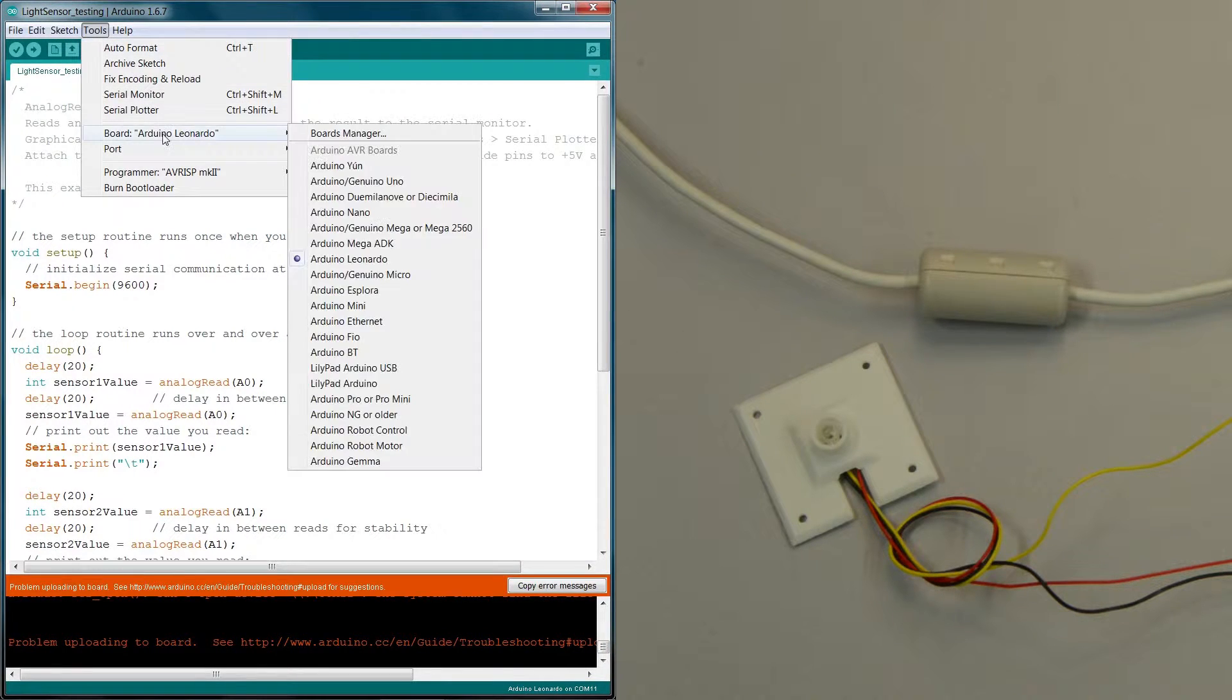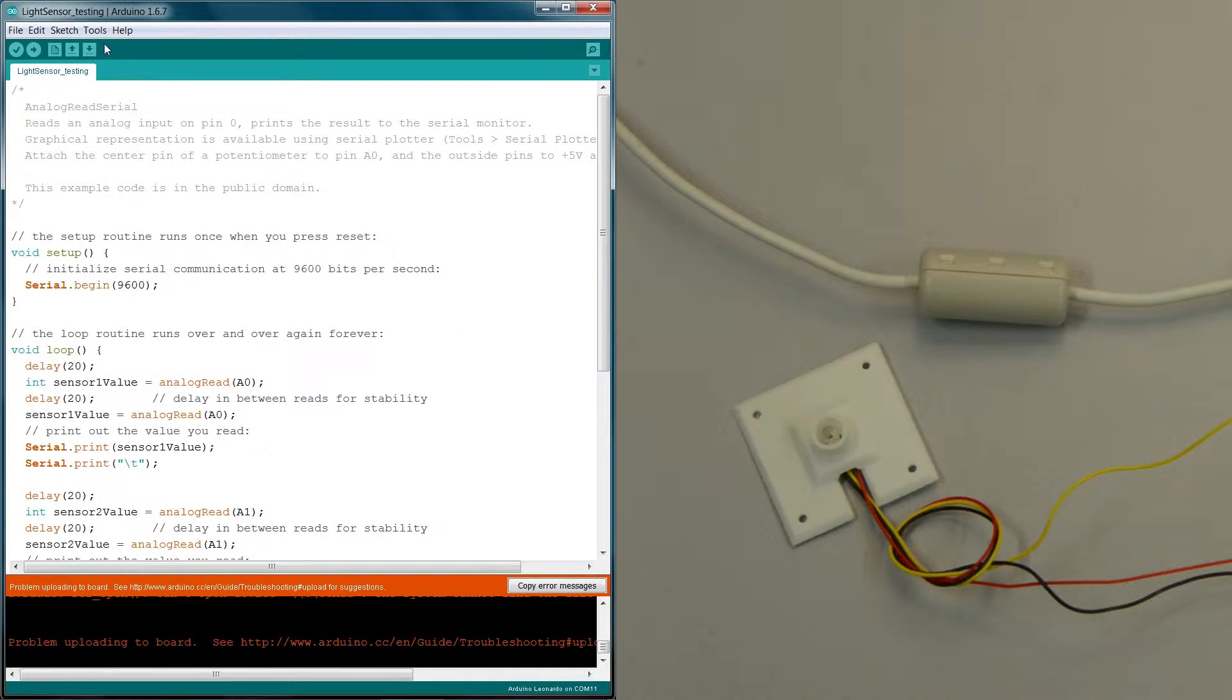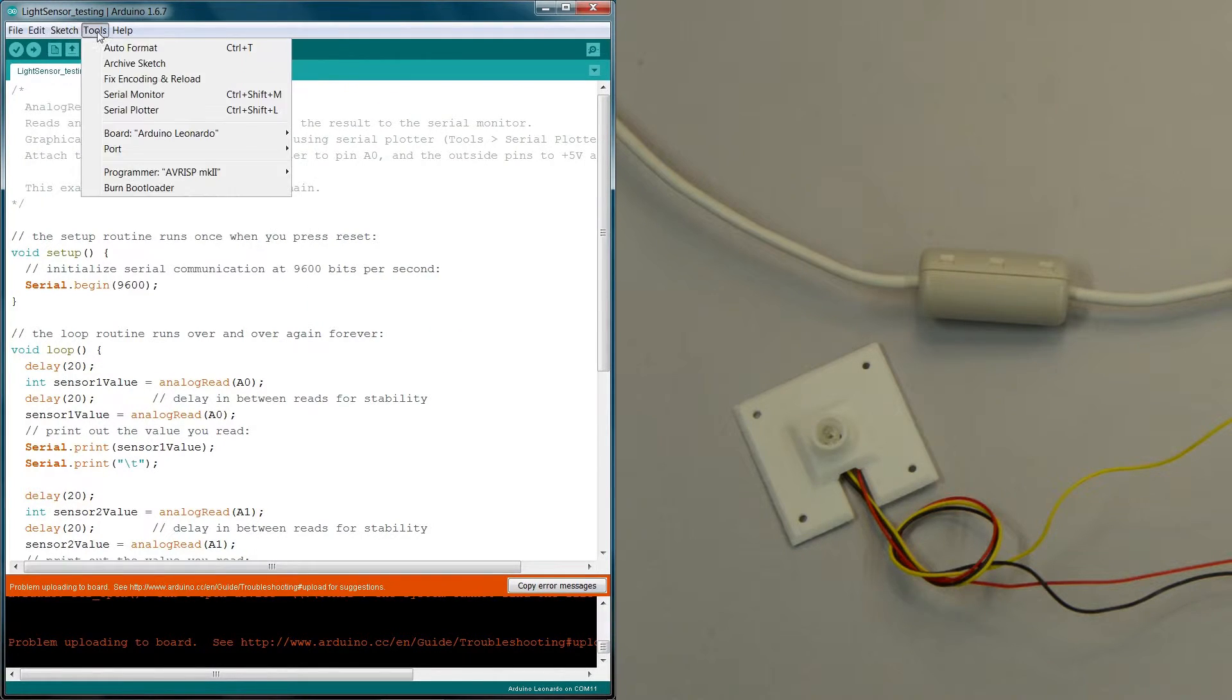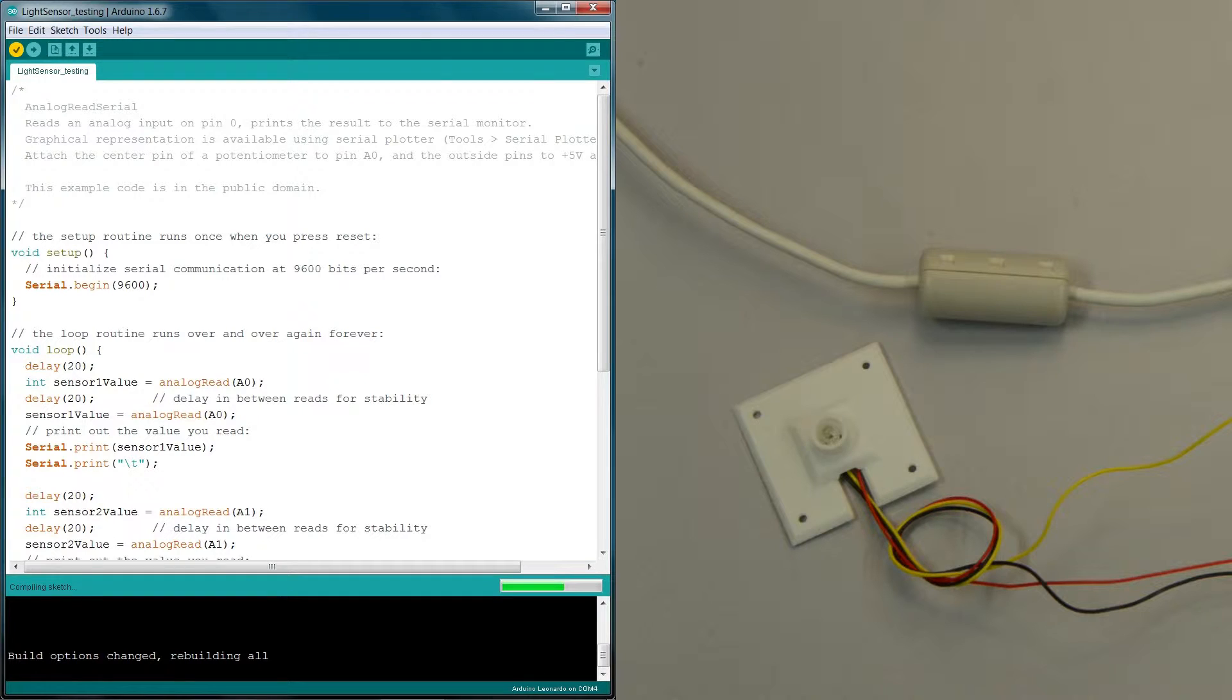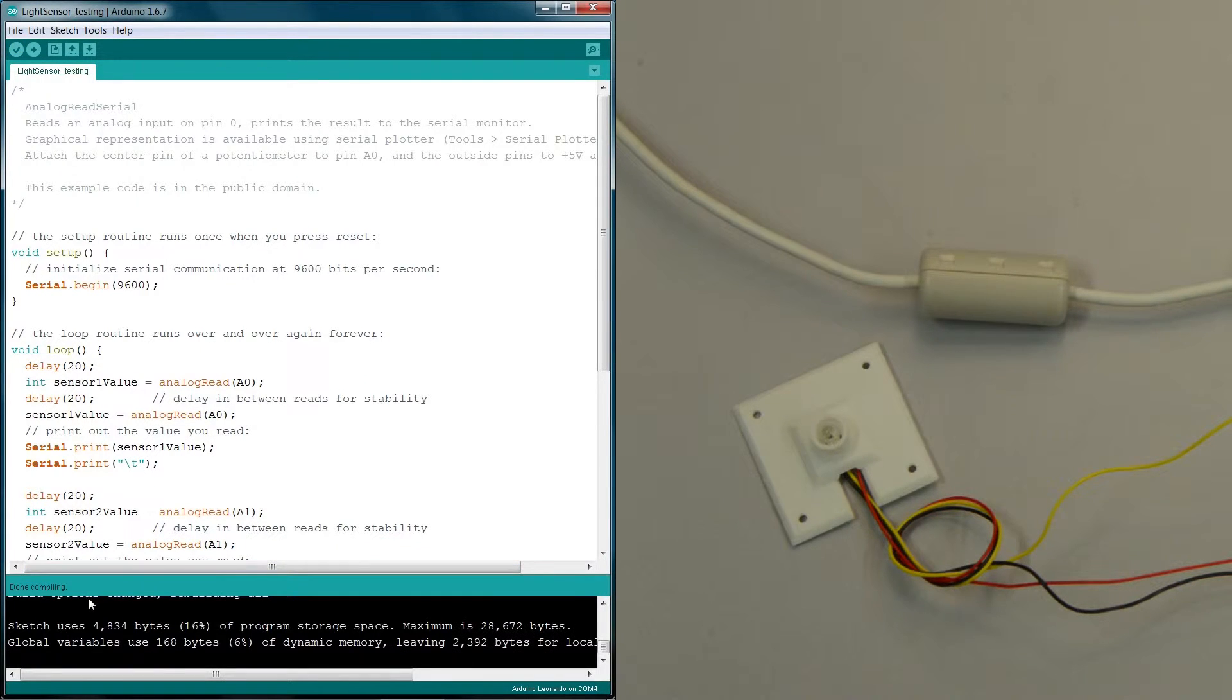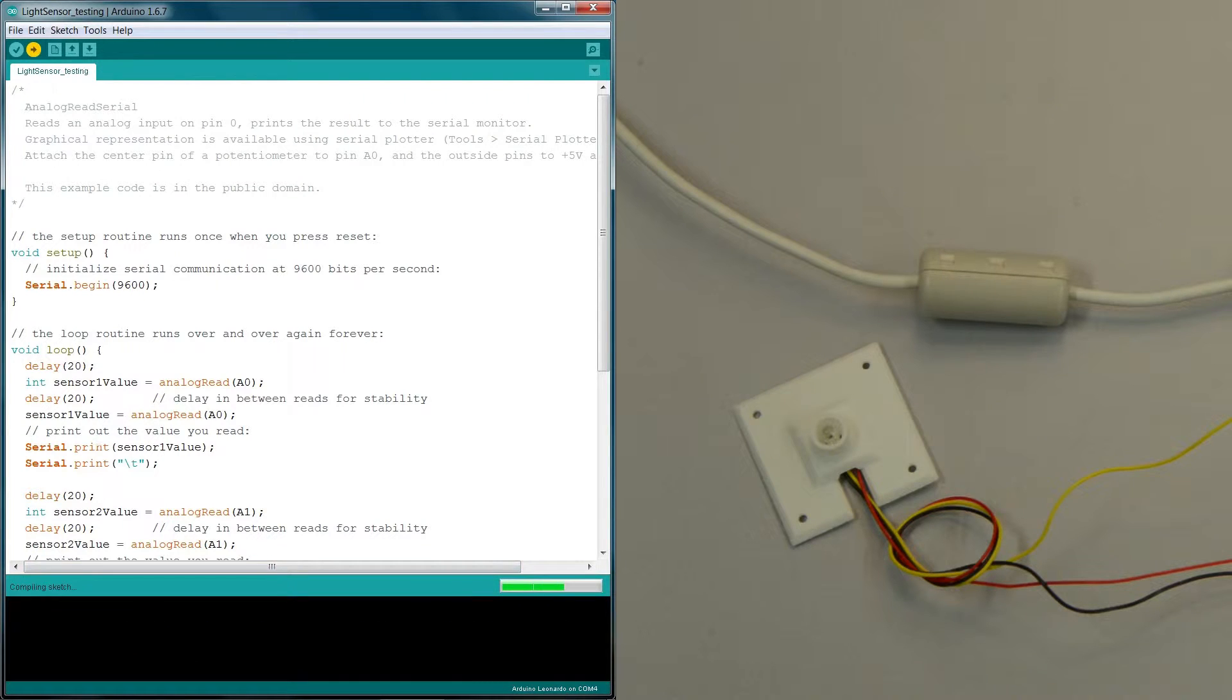Click Tools, Board, and select Leonardo. Then click Tools, Port, and select the COM port corresponding to the microcontroller. Compile the code using the button with a tick mark, and then upload it using the button with an arrow.